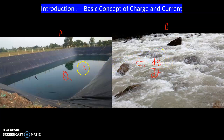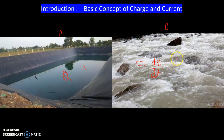Usually, we say here there is a current. Current is the rate of flow of water, and then we say the rate of flow of charge. So we will say I is equal to DQ by DT.